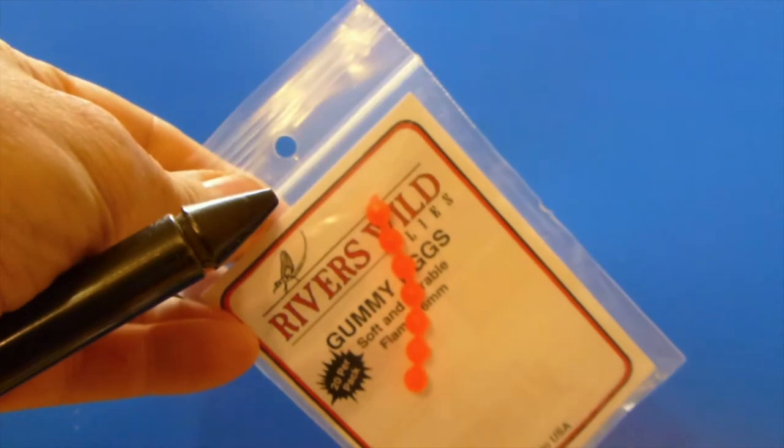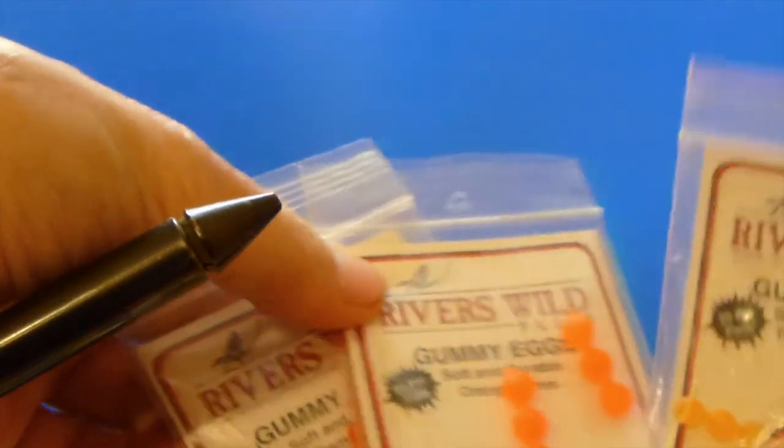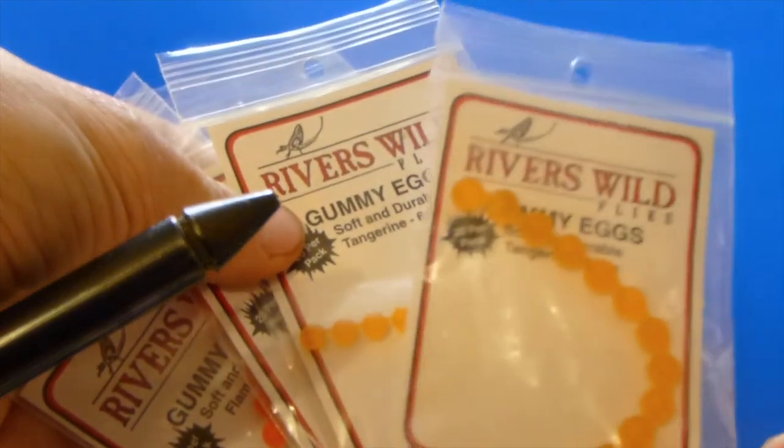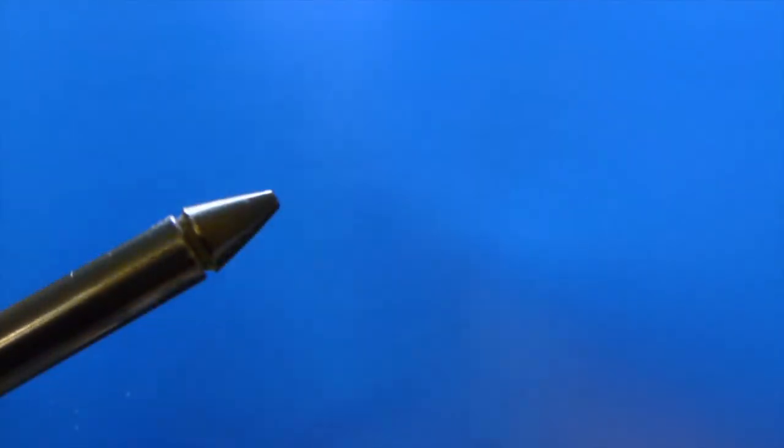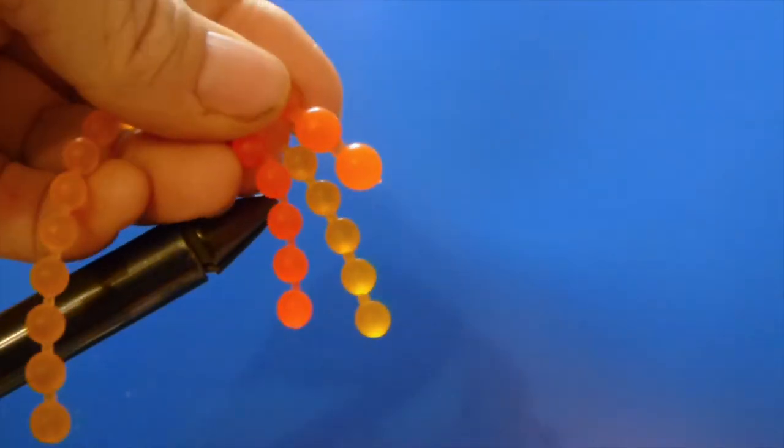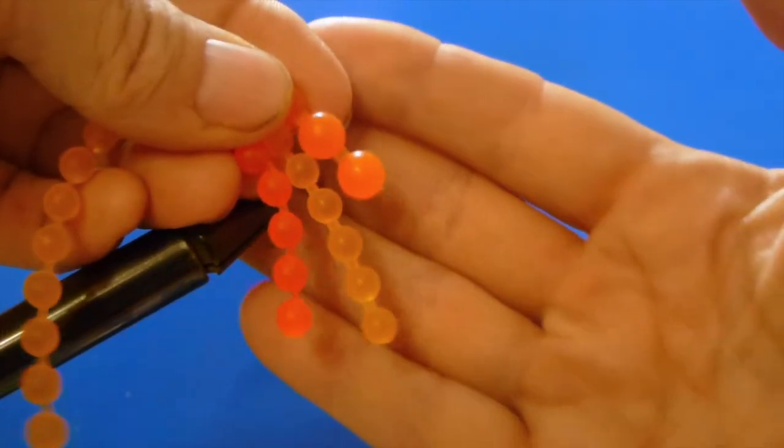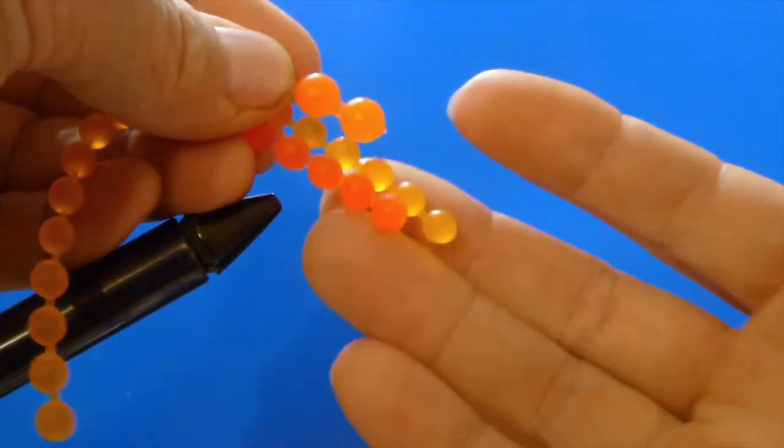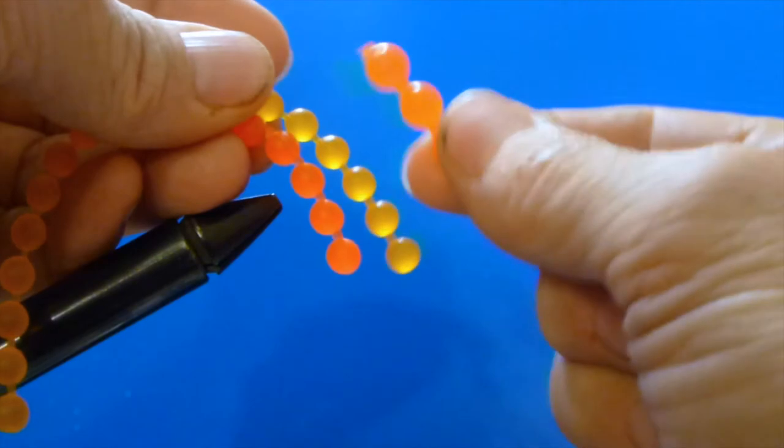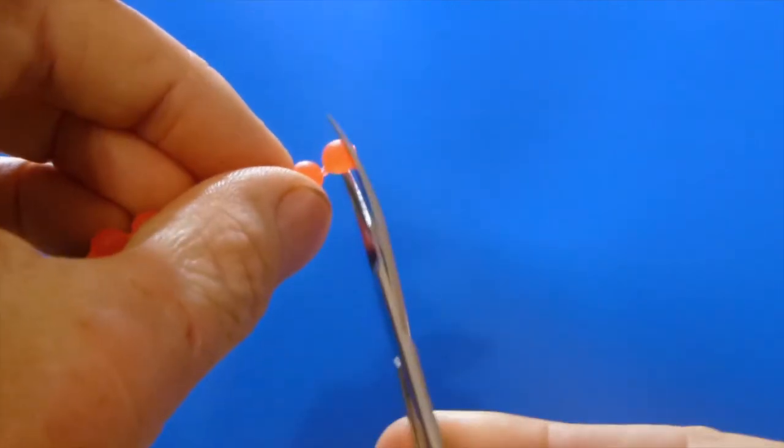Now my favorite fly for fishing the kokanee landlocked sockeye salmon are called gummy eggs. They come in various sizes and diameter and a few different shades of orange to red. Now I'll use the different sizes and shades depending on the water color itself. In murky water I'll size up or go to a brighter shade.